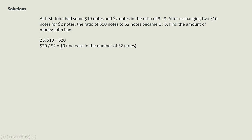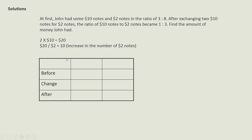So we draw a table. Here is $10 and here is $2. So before, the ratio is 3 to 8, so I write 3 units to 8 units.